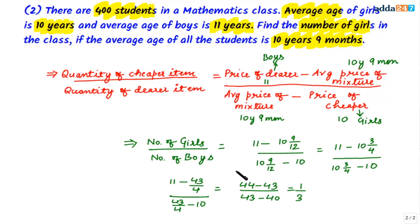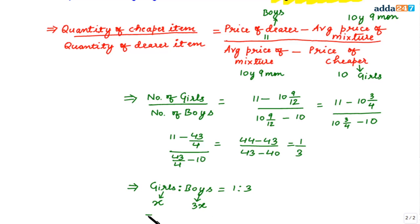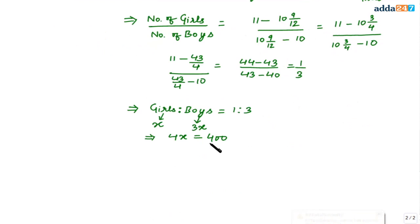So the number of girls divided by number of boys is 1/3, meaning the ratio of girls to boys is 1:3. If the number of girls is x, then the number of boys is 3x, giving a total of 4x. Since total students = 400, x = 400/4 = 100. Therefore, 100 is the number of girls in the group.